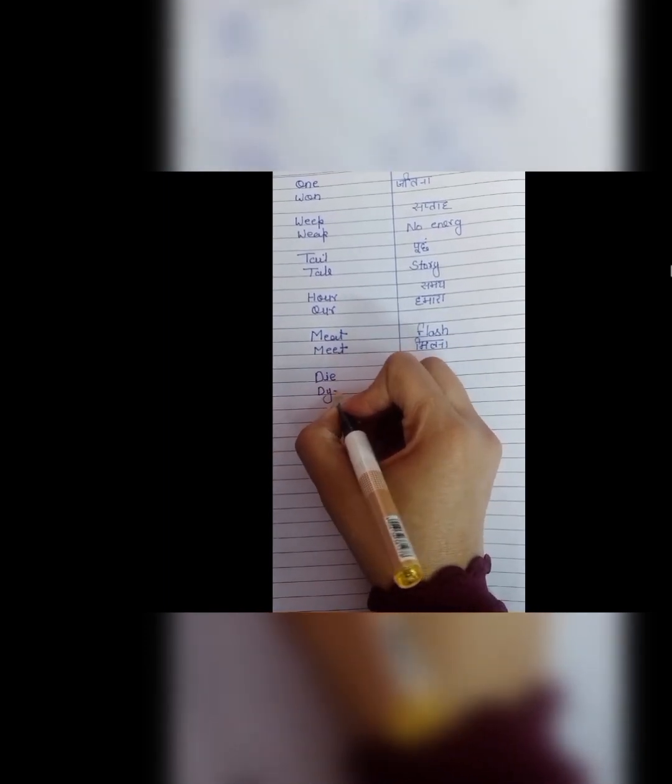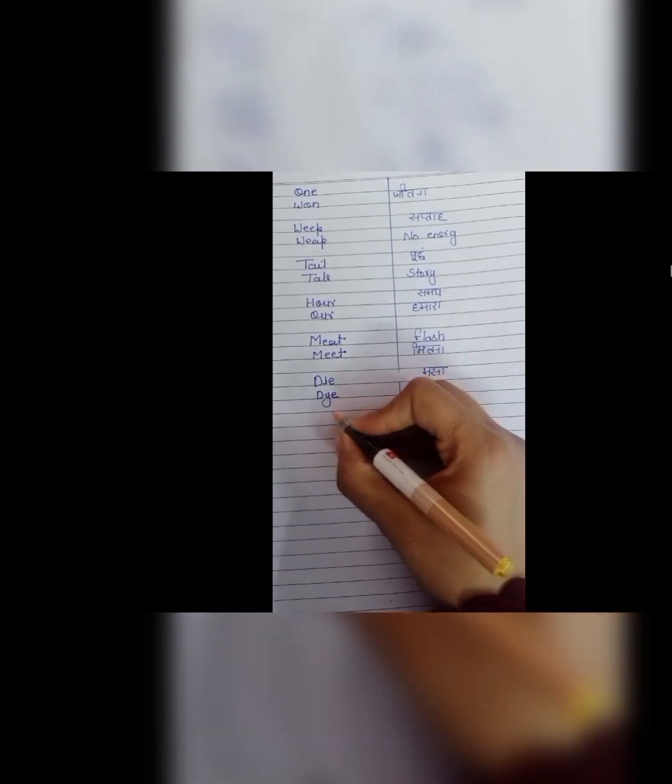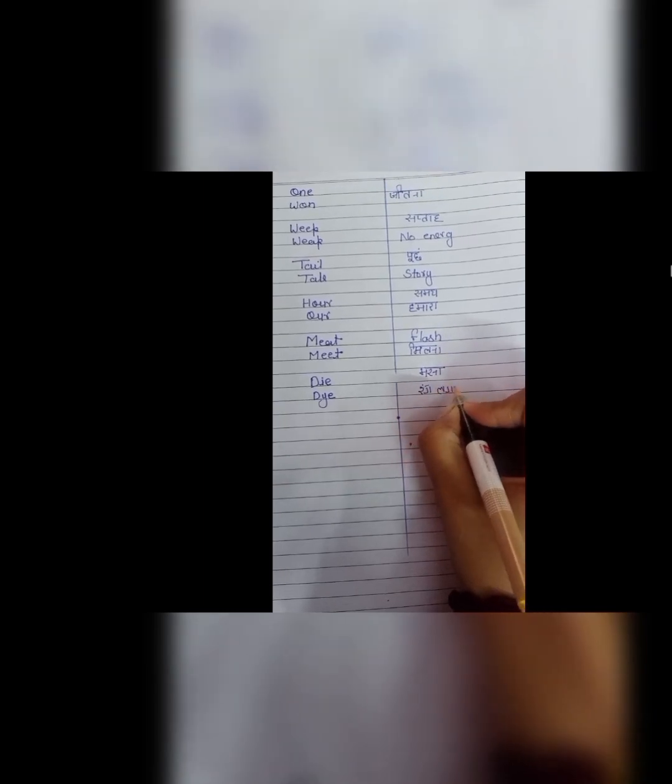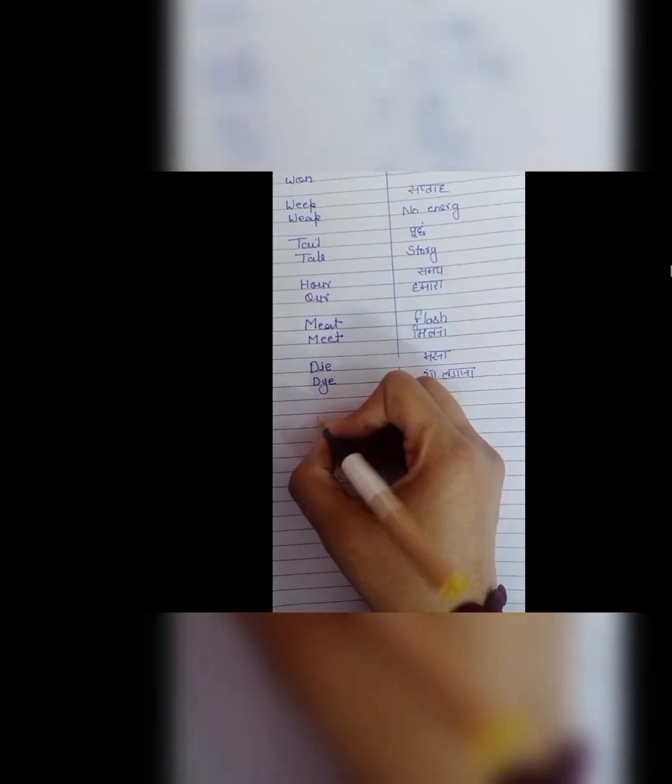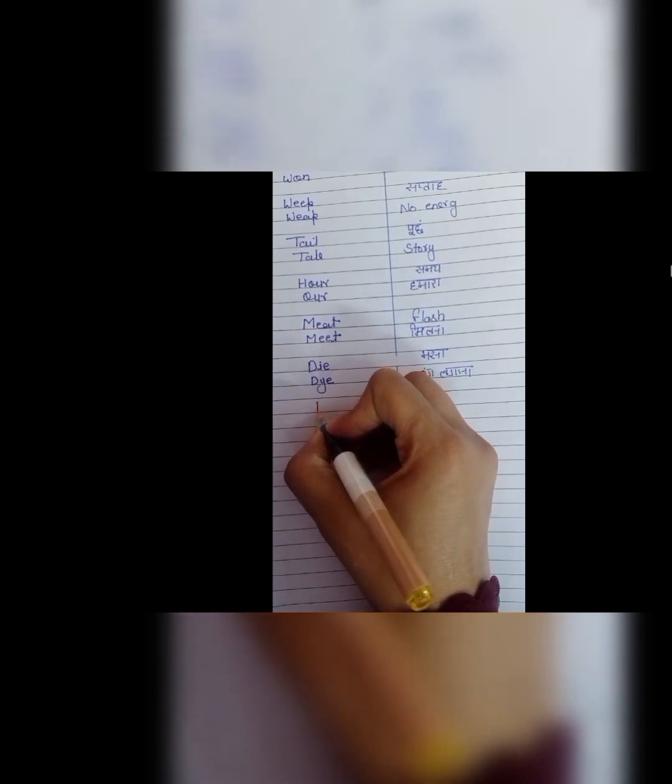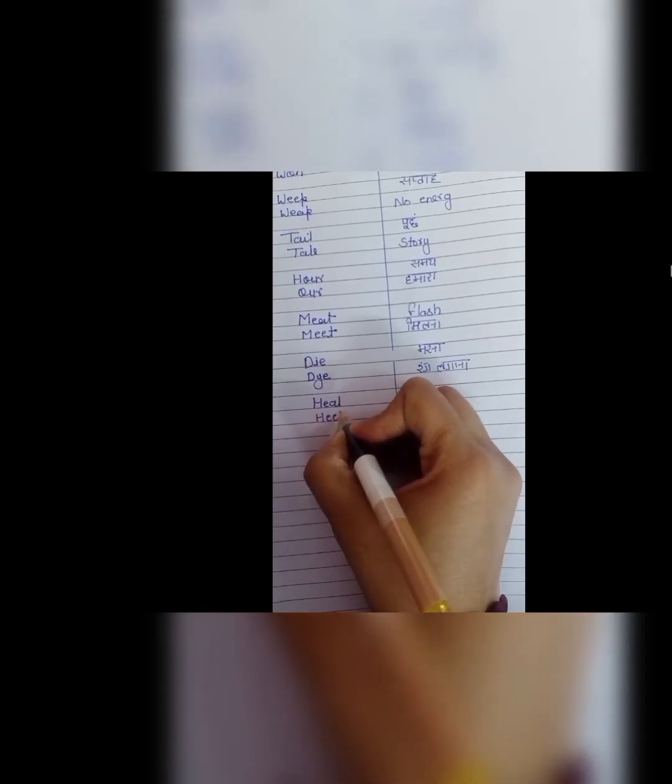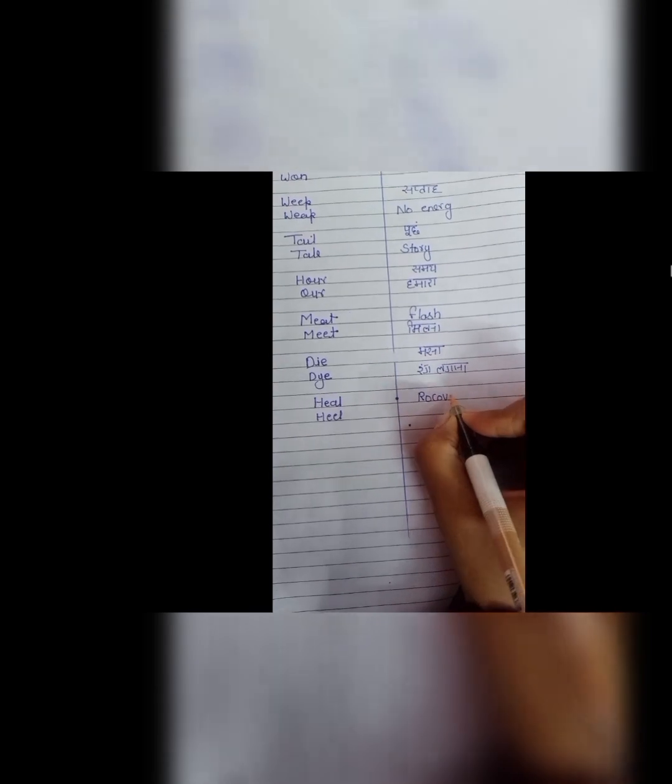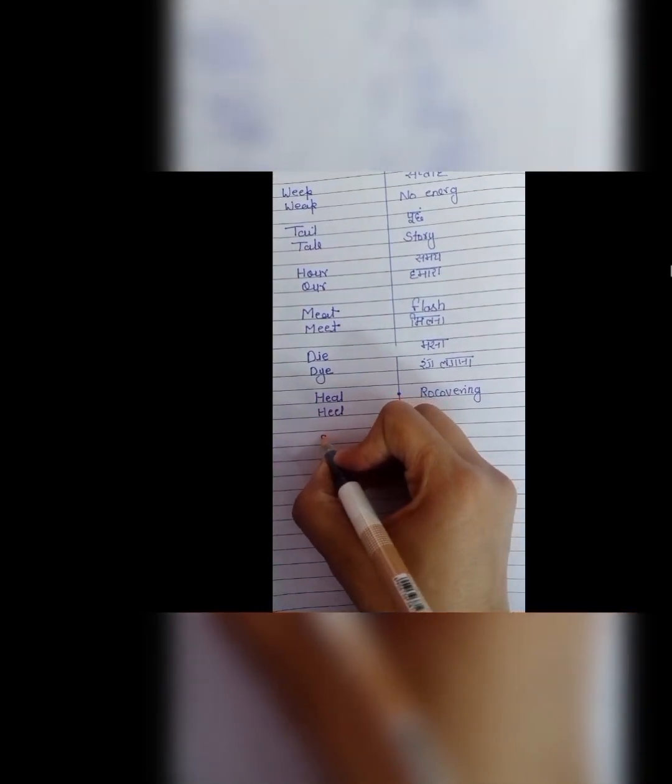Next is heal and heel. H, E, A, L, heal. And H, E, E, L, heel. I have a meeting with this person. Then we used heal. H, E, A, L, heal. And this homophone is heel H, E, E, L, heel which is our shoes heel.